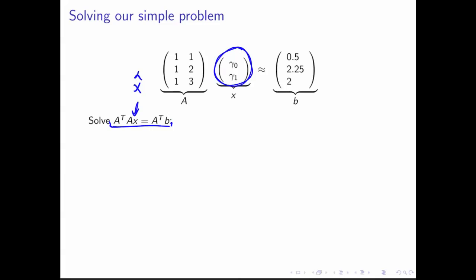Except that in this particular case the components of that were the coefficients of our line, and we actually called those gamma zero, gamma one. So I guess that's just a little bit confusing, but let's keep going.